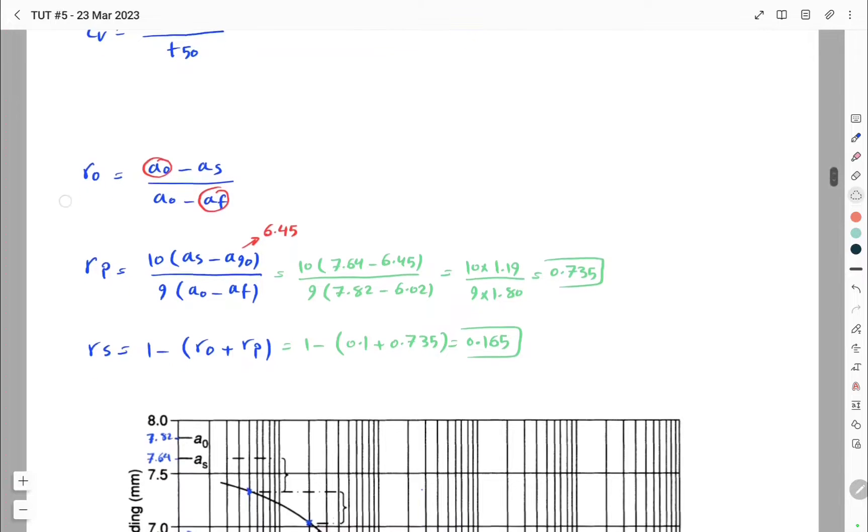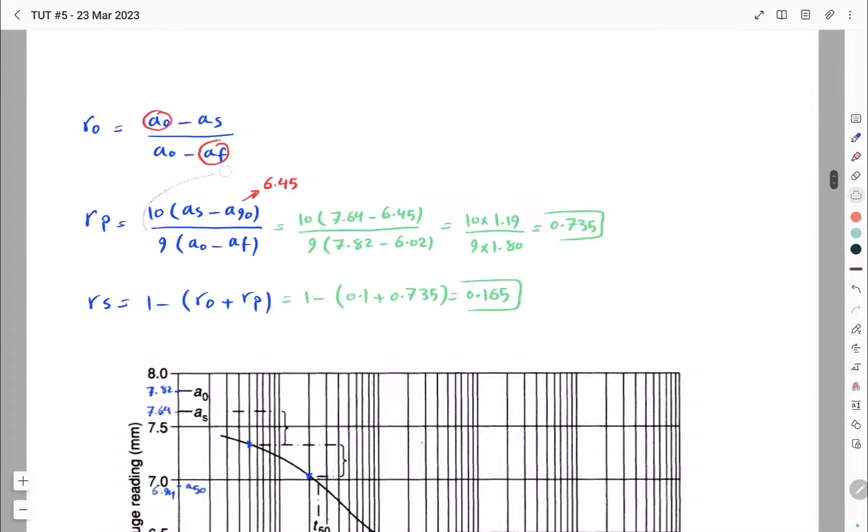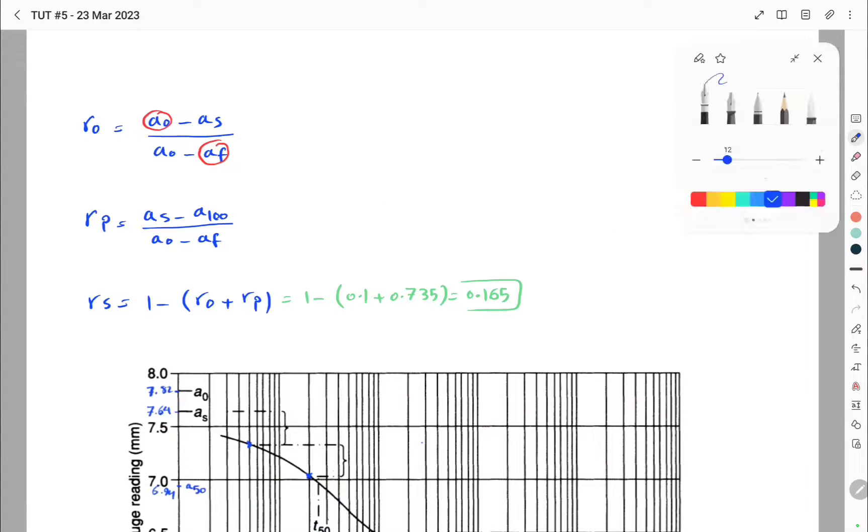However, we have to determine the new values for AS and a0 in our log time plot, but the values of a0 and AF are the same. For RP, we have another equation. The new one is AS minus a100 divided by a0 minus AF.